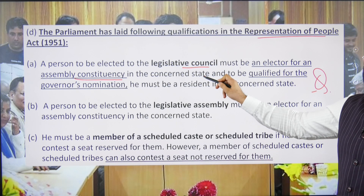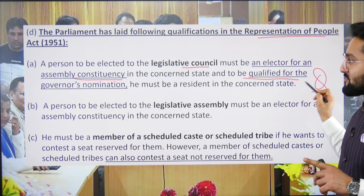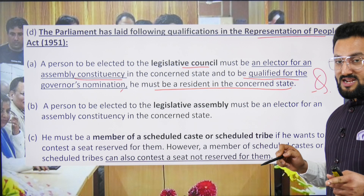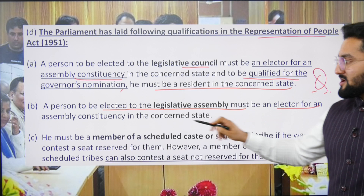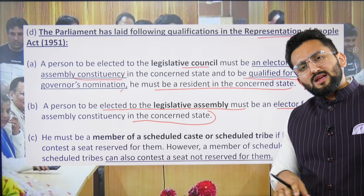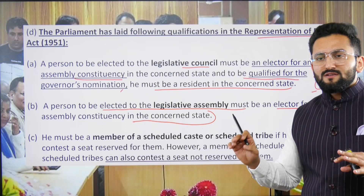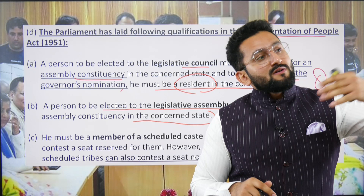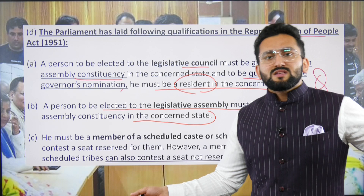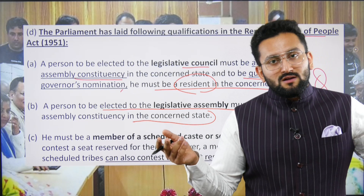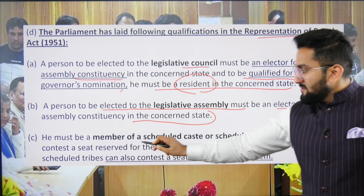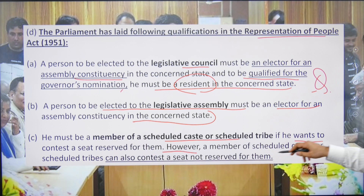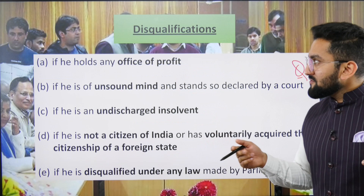To be elected to the legislative council, a person must be an elector for any assembly constituency of that state. To be qualified for the governor's nomination, the person must be a resident of the concerned state. To be elected to the legislative assembly, a person must be an elector in that assembly constituency. A member of a Scheduled Caste or Tribe must be so if contesting a reserved seat, though they can also contest general category seats.